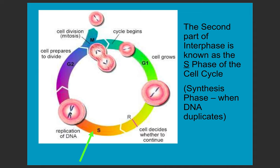Finally in G2 — growth two or gap two phase — this is when the microtubules and other proteins necessary for cell division are made. These include the spindle fibers, which are made of microtubules, a specific kind of structural protein. Centrioles are another microtubule structure. These are all the structural parts necessary for the mechanical aspect of cell division.